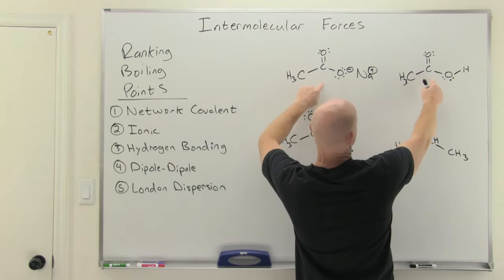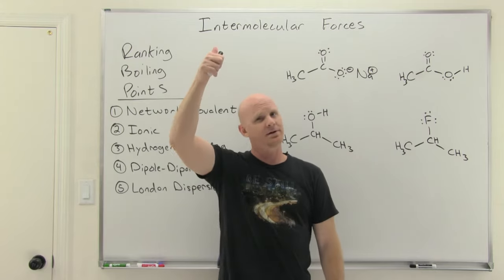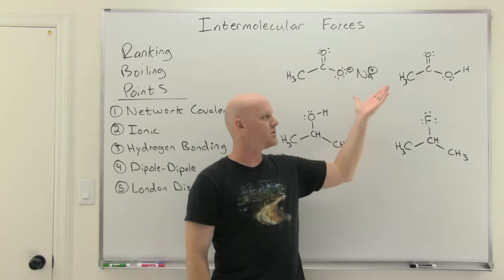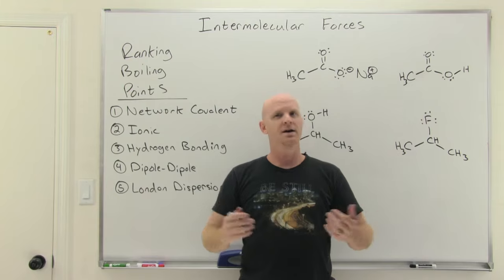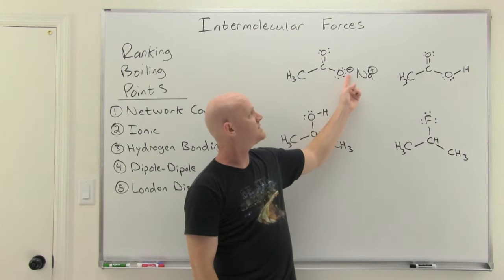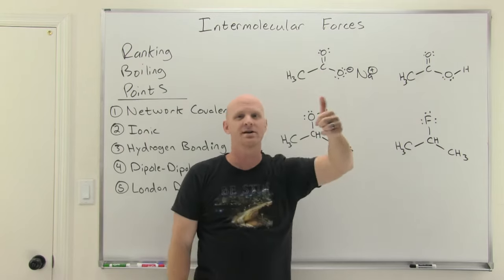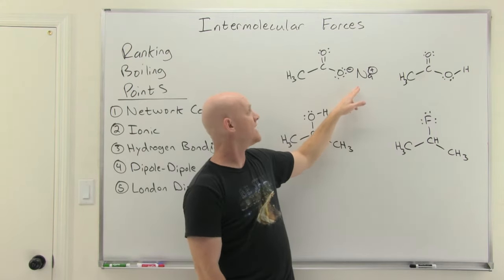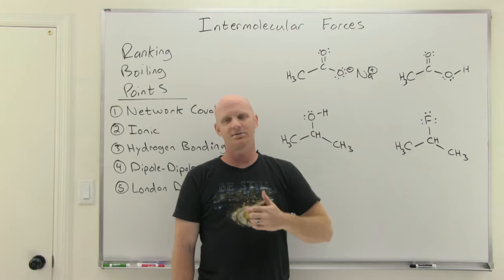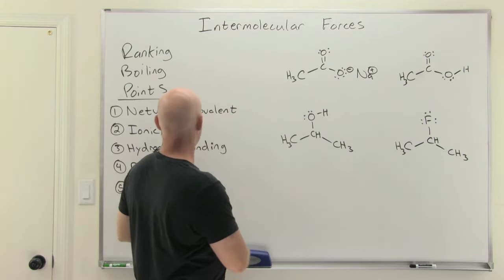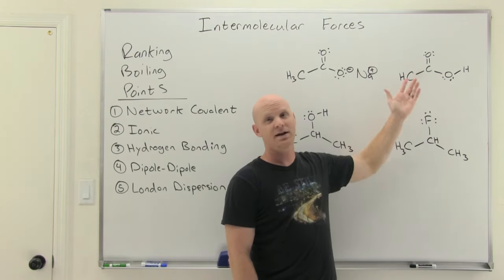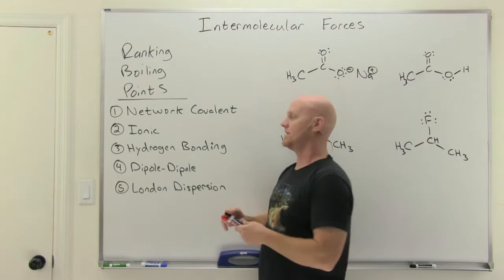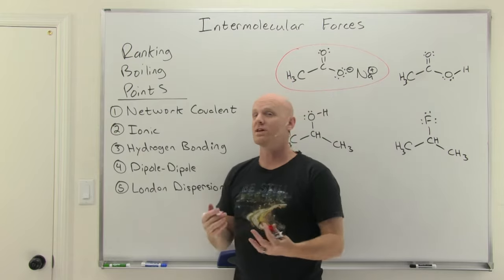If I want to compare boiling points: first, no network covalent solids. Do I have any ionic compounds? If I see a negative ion and a positive ion right next to each other, I have an ionic compound. In organic chemistry, you'll often actually be able to see the plus and minus right next to each other — dead giveaway. Because we have an ionic compound, that's going to be a rather high boiling point. The other molecule might have hydrogen bonding with an OH, but it doesn't matter — the ionic compound, hands down, is going to have the higher boiling point.